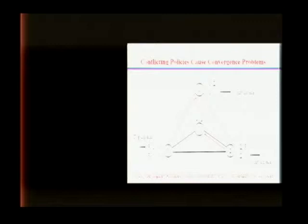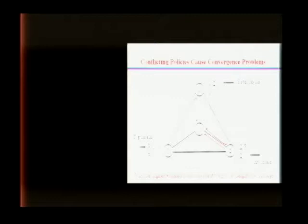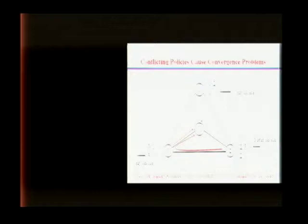Then Autonomous System 1 learns a path he prefers better than the one he was using before, so he switches, withdrawing the path 1,0 he had told AS3 about. Now AS3 is unhappy and has to switch to his second preferred choice — but that makes AS2 happy, and the cycle continues indefinitely. This system has no stable solution.